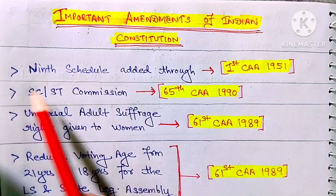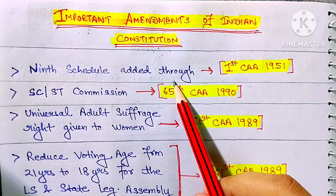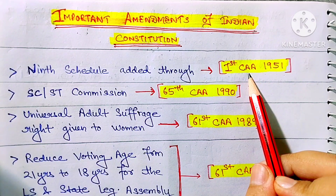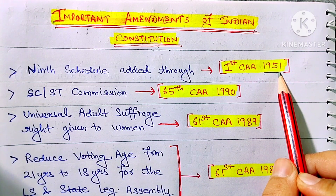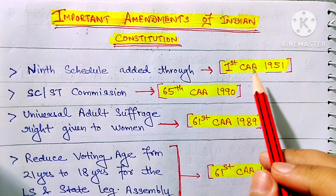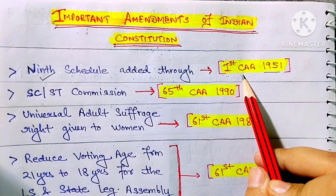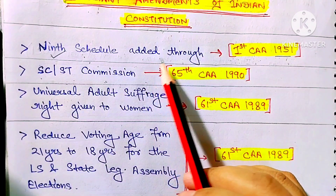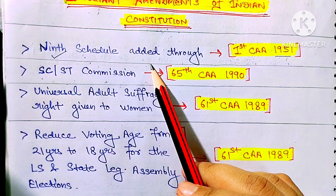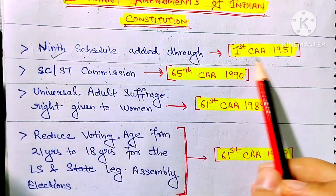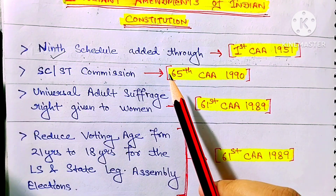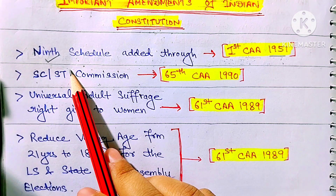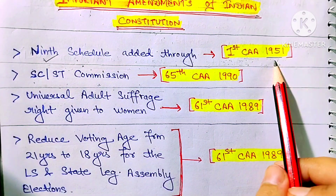First: the 9th Schedule was added through the First Amendment Act 1951. Also remember that our Constitution has a total of 12 Schedules, and all of them were added through Constitution Amendment Acts. The 9th Schedule contains a list of central and state laws which cannot be challenged in court, and it was added by the Constitution First Amendment Act 1951.